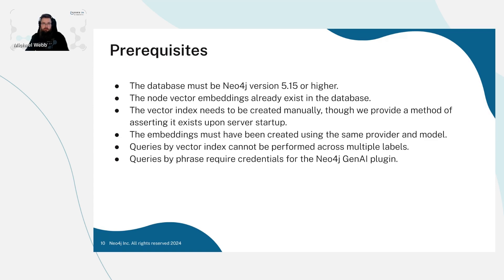There are some prerequisites to using this. The database must be Neo4j version 5.15 or higher, because it's a relatively new feature. The node vector embeddings must already exist in the database — as it's read only, that needs to be done outside of this directive. The vector index needs to be created manually, though we provide a way of asserting it exists when the server starts up. The embeddings must have been created using the same provider and model — so if you used OpenAI to generate the embeddings, you must also use OpenAI to query them. Vector indexes cannot be performed across multiple labels, so you can't search across vectors on both movies and actors — it'd have to be just movies or actors. Queries by phrase require credentials to connect to your LLM provider API.